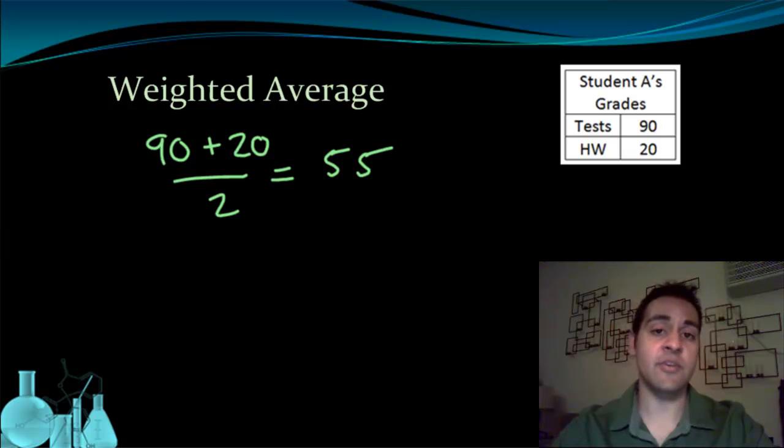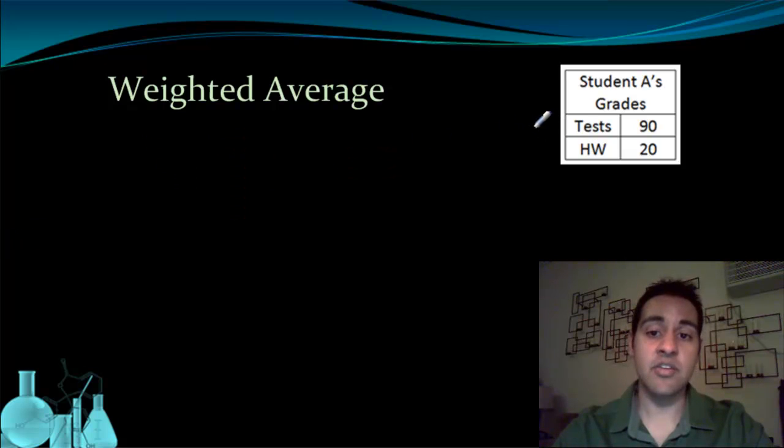So this idea of what these things are worth is going to matter when we talk about weighted averages. Let's try this again with new information. This time, I'm going to tell you that tests are worth 75% of the grade and homework is worth 25% of the grade. So now when you calculate student A's overall grade, you're going to weight the test category more heavily than the homework category. This leads us to something called a weighted average.